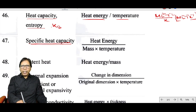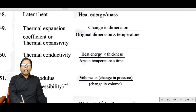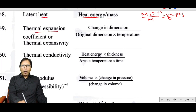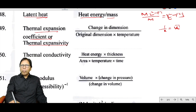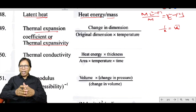Specific heat capacity equals heat energy divided by (mass × temperature): ML²T⁻² ÷ (M × K) = L²T⁻²K⁻¹. Latent heat equals heat energy divided by mass: ML²T⁻² ÷ M = L²T⁻². Coefficient of thermal expansion (expansivity) has dimension K⁻¹, as fractional change in length per unit temperature rise.